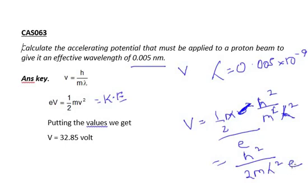And e, charge of electron, which is 1.6 into 10 raise to minus 19. So you will get the answer. And here mass of electron is 9.1 into 10 raise to minus 31. So we will get the answer as V is equal to 32.85 volt.